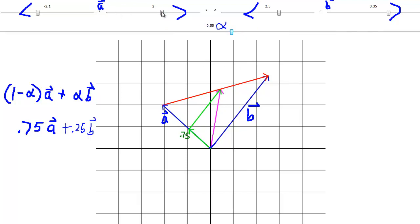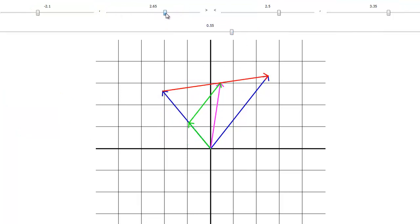But it doesn't matter what vector A and vector B is. I can adjust these all I want to and the interpolation works just the same. Let's do something, I don't know, somewhat crazy this way. And you can't even see it because it's off the screen. I'll bring it back on.